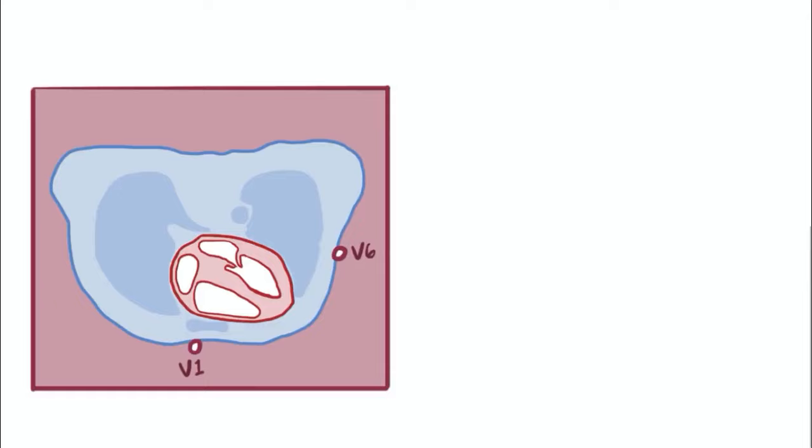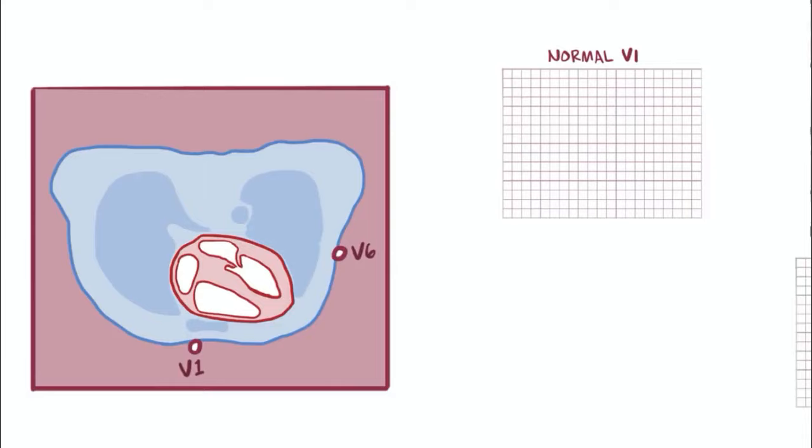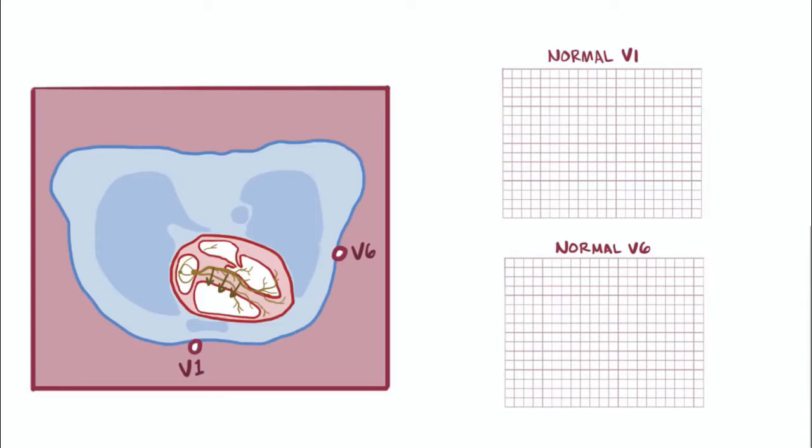V1 and V6 are particularly helpful because they're the farthest apart from each other and therefore have the most contrast between views. Normally, the first thing to depolarize is the septum, and the wave of depolarization moves from the left bundle branch toward the right ventricle, so toward V1 but away from V6, meaning you'll get a positive deflection on V1 and a negative deflection on V6.